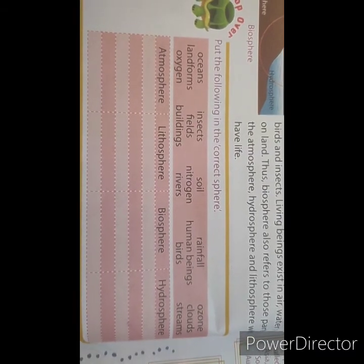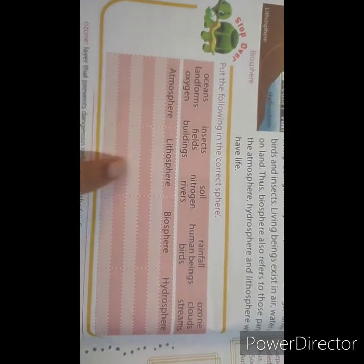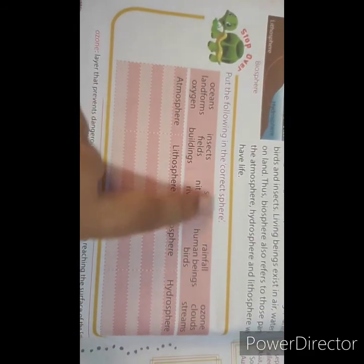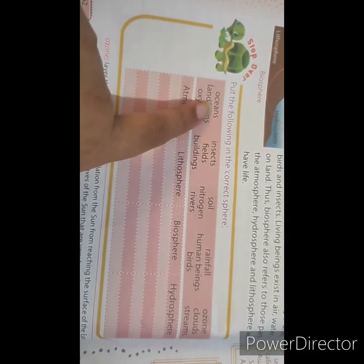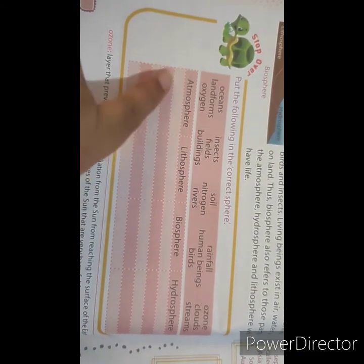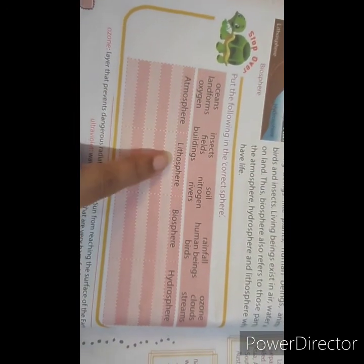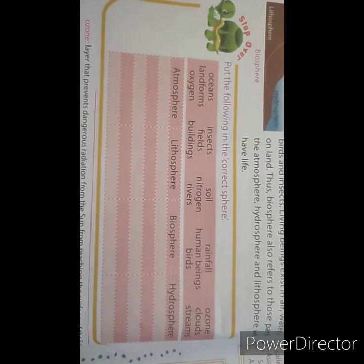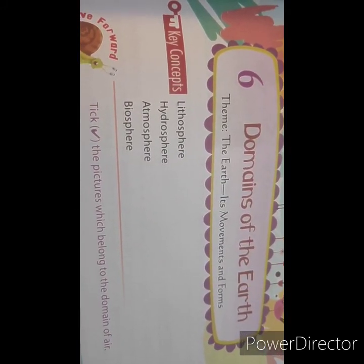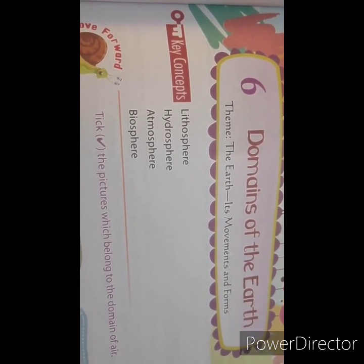My dear students, here is one question for you. You have to put the following items into the correct sphere. Different spheres are given — atmo means air, litho means stone or land, bio means living organisms, and hydro means water. Place each word under the correct sphere. I hope you all understand this chapter. Kindly read this chapter once again on your own. Thank you and have a good day.